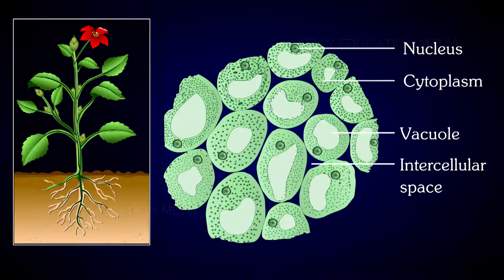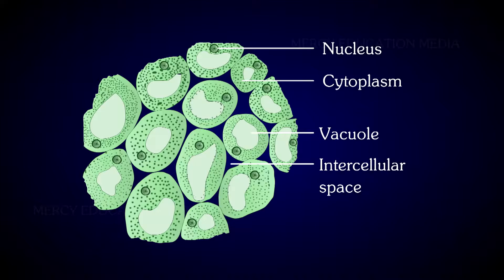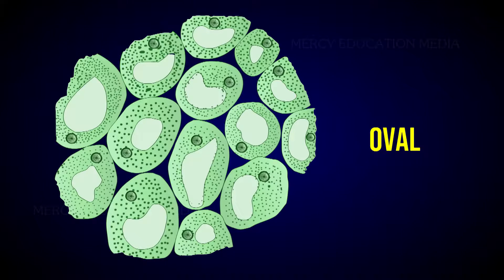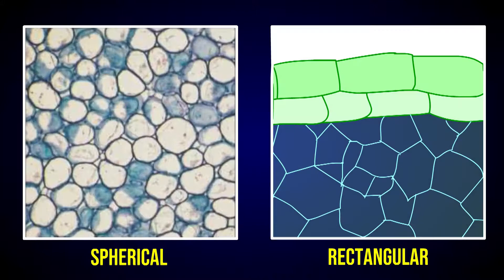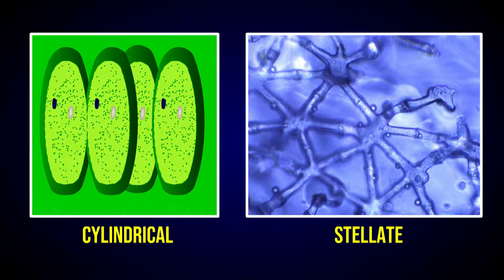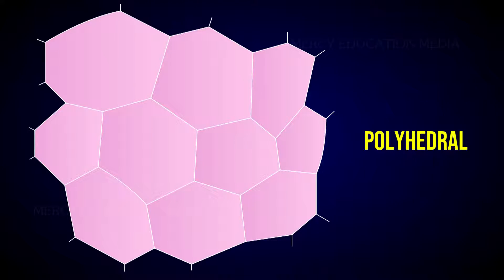Parenchyma is the precursor of all the other tissues. Parenchyma is a living tissue and made up of thin walled cells. The cell wall is made up of cellulose. Parenchyma cells may be oval, spherical, rectangular, cylindrical, or stellate. The cells are usually polyhedral with 10 to 12 facets. Parenchyma is of different types and some of them are discussed as follows.